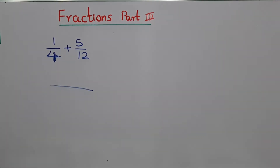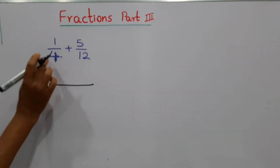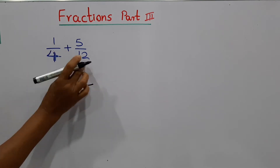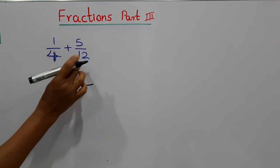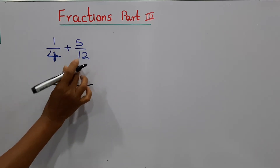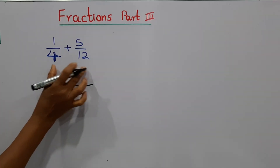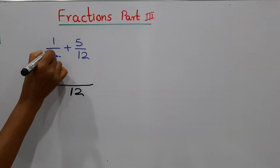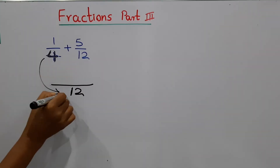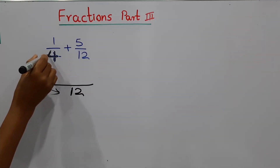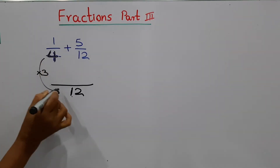We can take number 4 and number 12. What is the biggest number out of these two? Number 12. Then we will check: are there fours in number 12? Yes. Then we can take 12 as the denominator in both fractions. To make 4 into 12, we multiply 4 by 3.